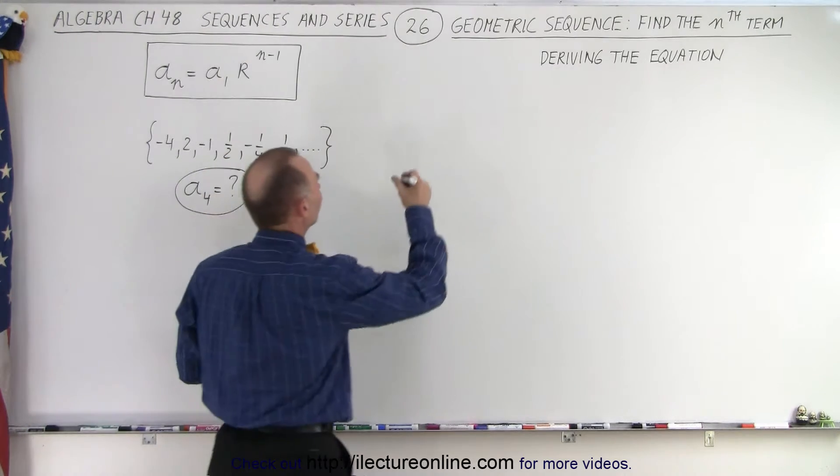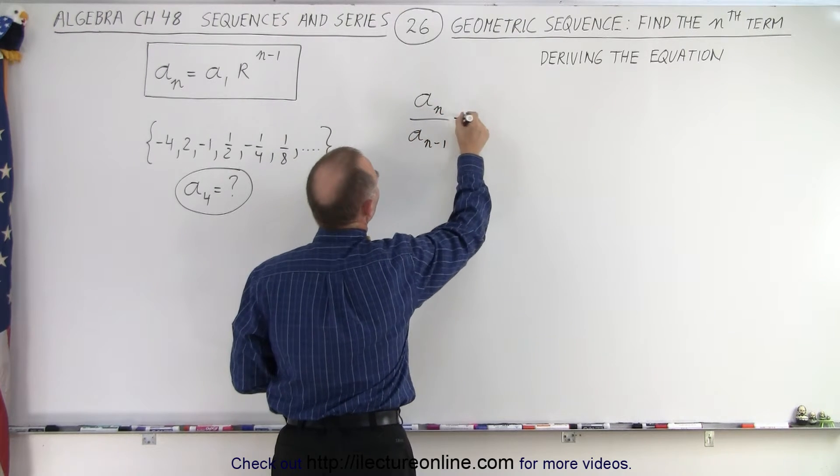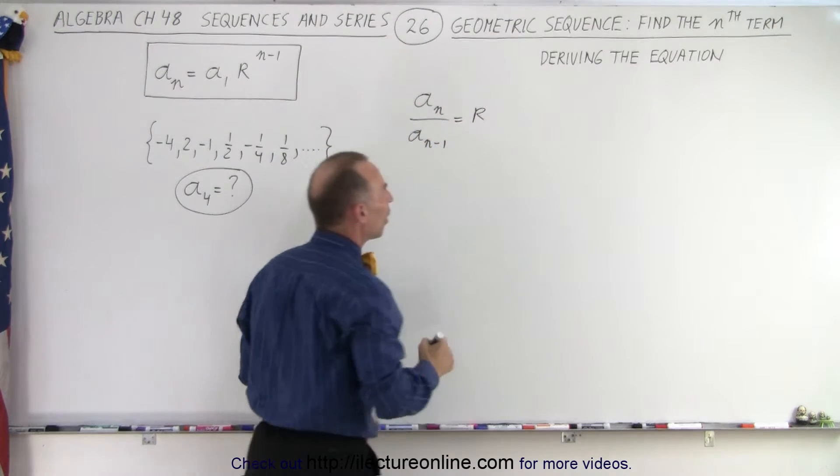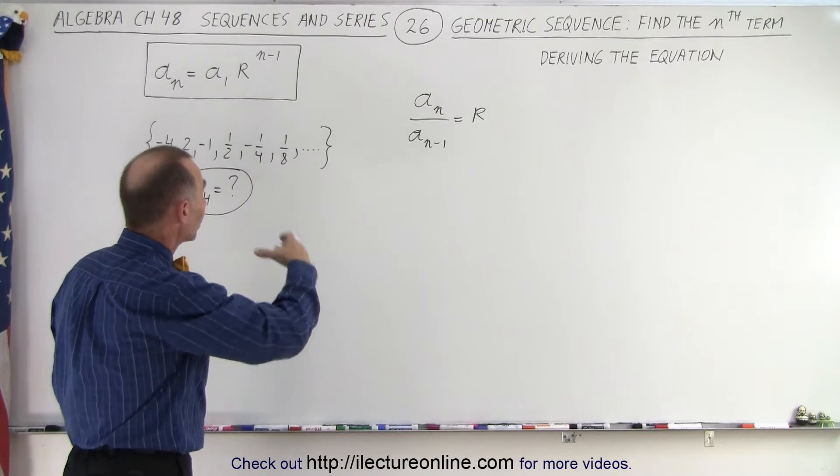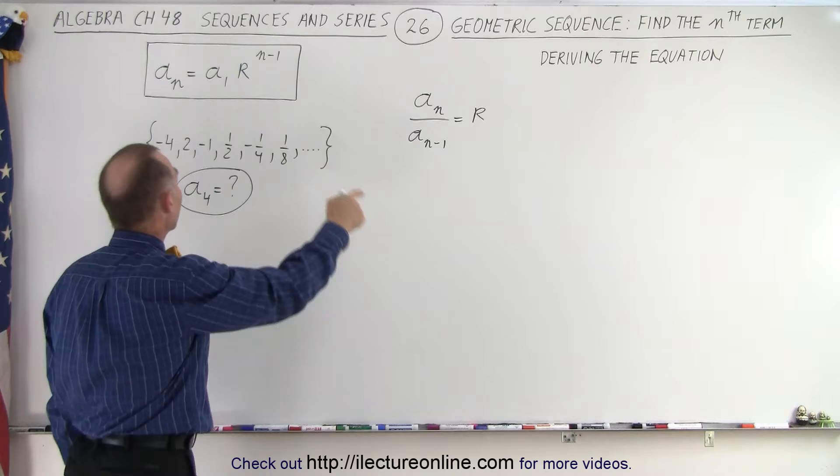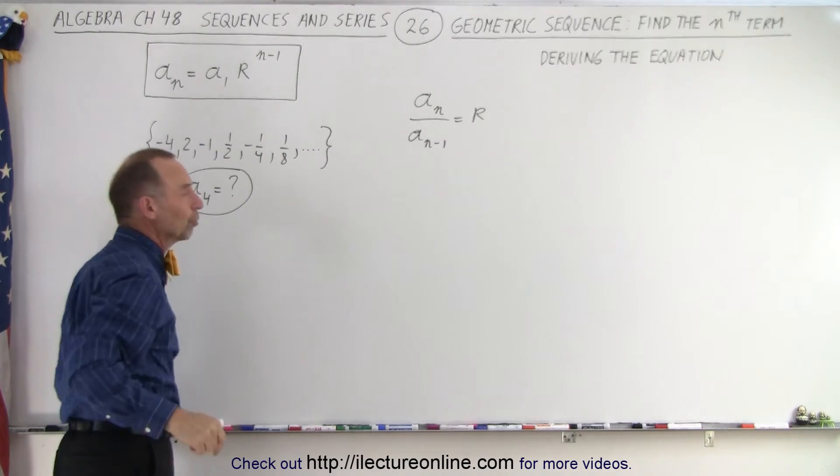In other words, we can say that a_n divided by a_(n-1) is equal to the common ratio r. That's what we need to do in order to figure out what the common ratio is. Once we know that and we know the first term in the sequence, we can find the nth term in the sequence.